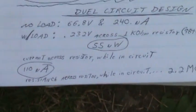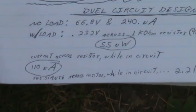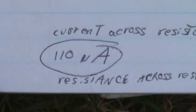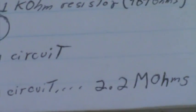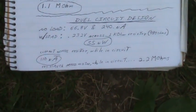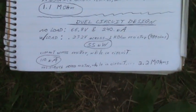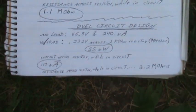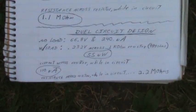Here's the same thing with two circuits. The current across the resistor while in the circuit is 110 microamps, and the resistance across the resistor while in the circuit is 2.2 mega ohms — that's with two circuits. So I just wanted to show you that. That's why I used the voltage across there.